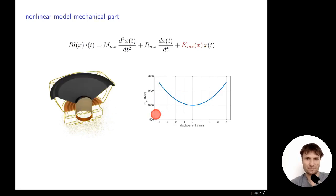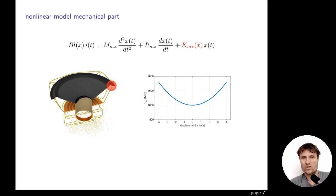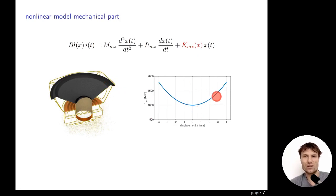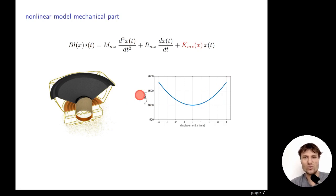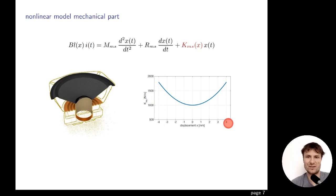On the mechanical part, we have stiffness dependent on displacement, KMS(x). When we stretch the surround and spider more and more, it becomes more and more difficult to stretch further. The stiffness, in newtons per meter, increases, so we need to put more and more newtons to reach higher and higher values of displacement in meters.